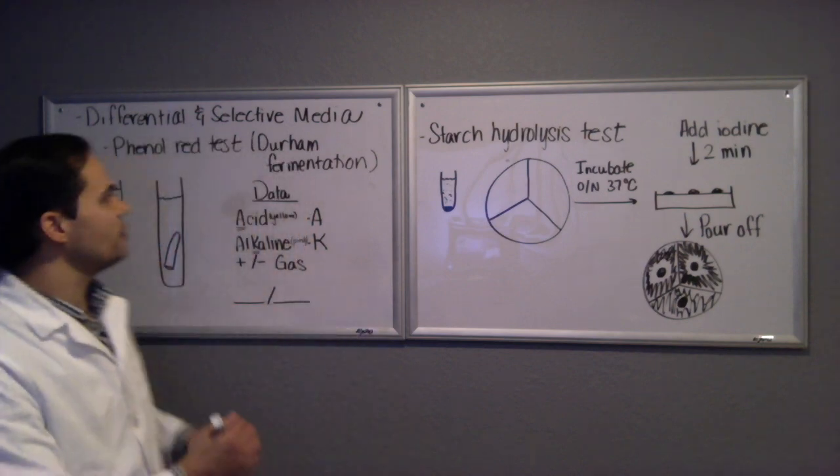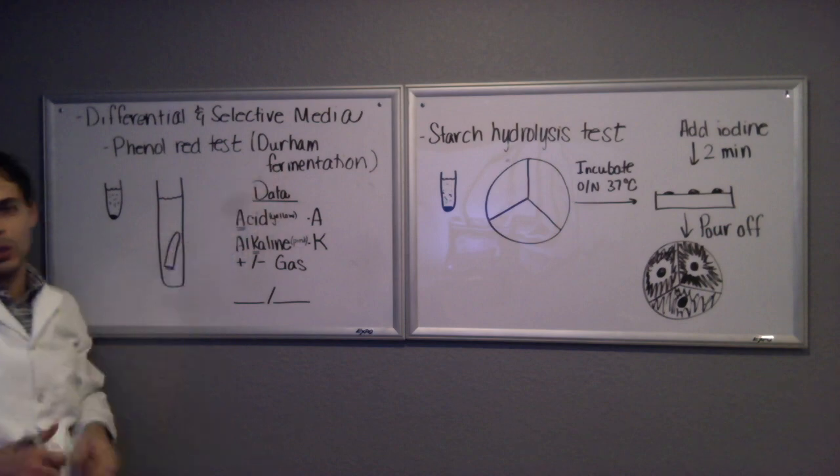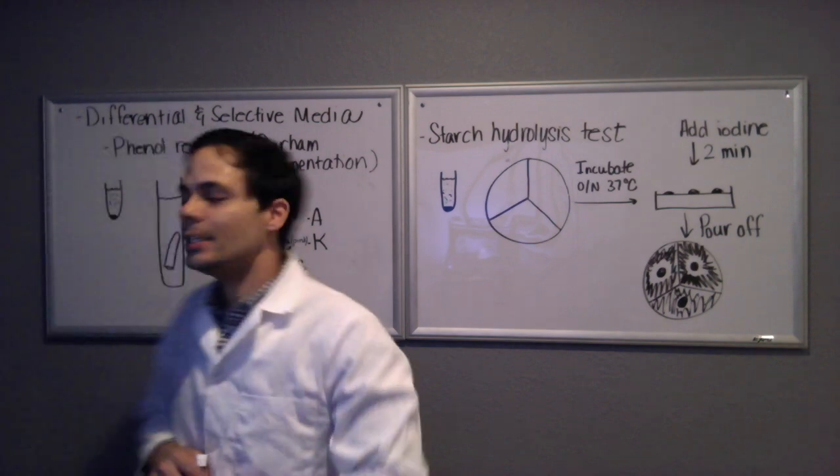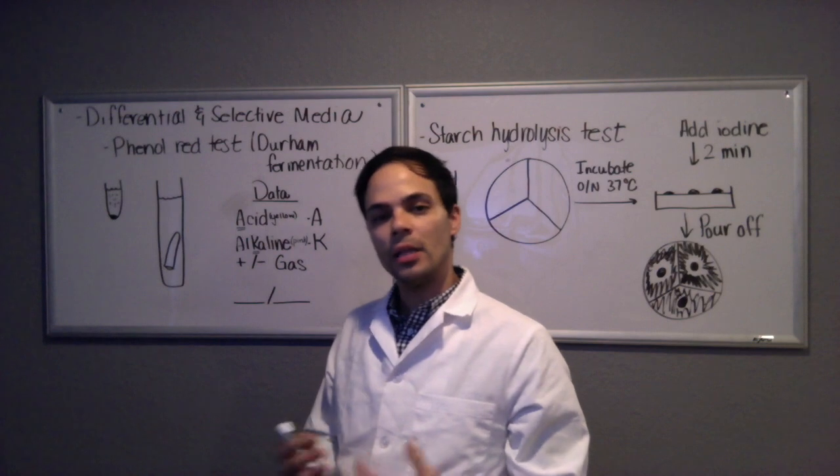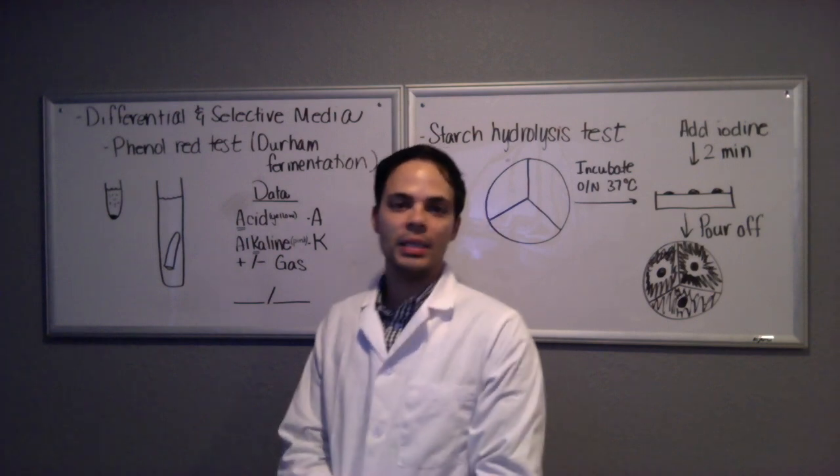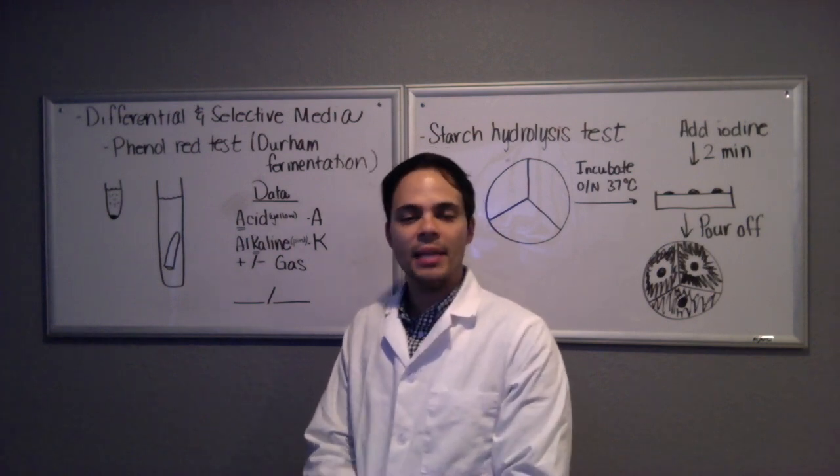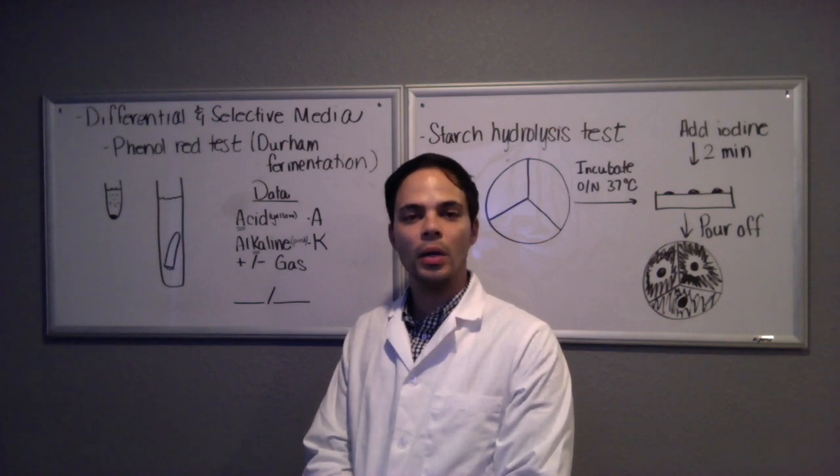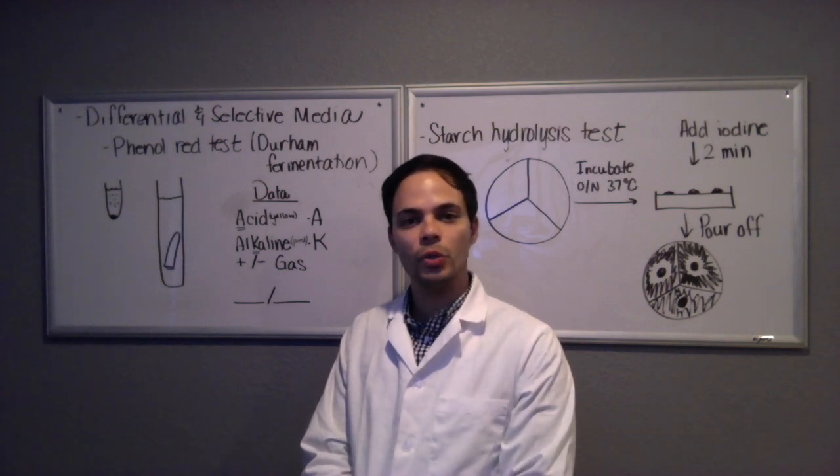Let's start with the phenol red test which is also known as the Durham fermentation test. This test is useful to tell us what types of sugars the bacteria are able to ferment, and different species of bacteria are able to ferment different types of sugars.